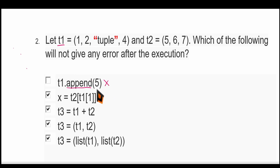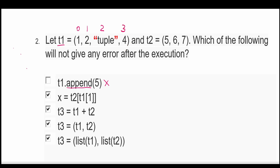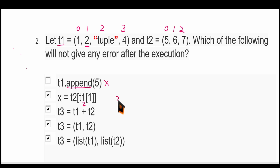Now you take this one — it is using T2 of T1 of 1. So 1 is the index of T1. You have to note down the indexes: this index is 0, index is 1, this is 2, this is 3. Similarly for T2, this is 0, 1, 2. T1 of 1 means this element is 2. Now you have to find T2 of 2, which is 7. So x will be 7. There will not be any error.